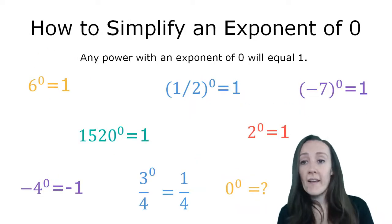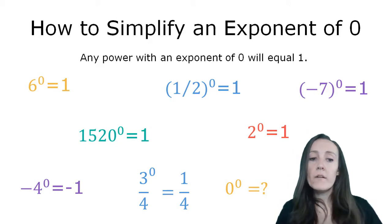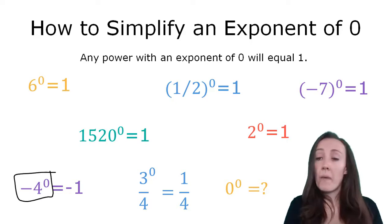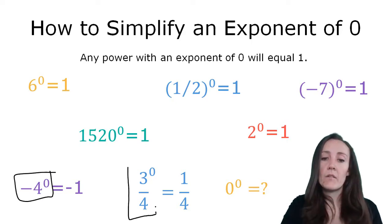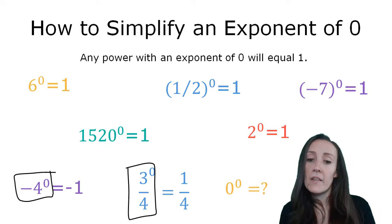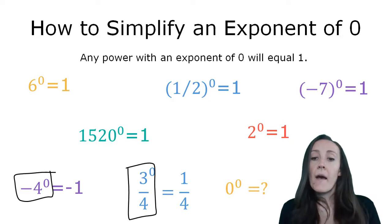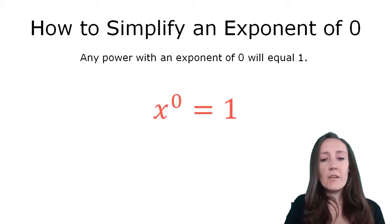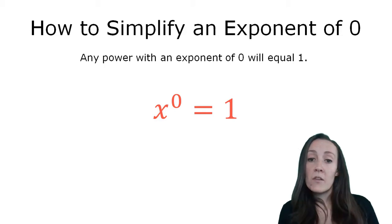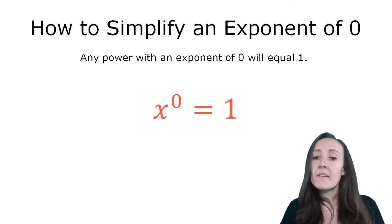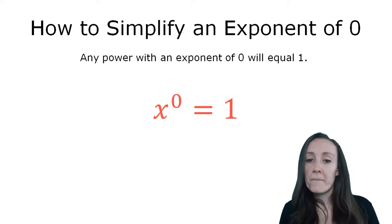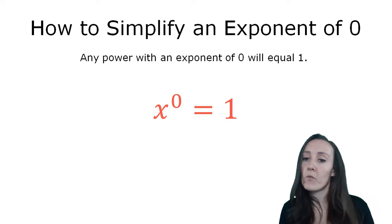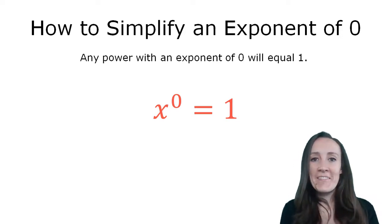So to summarize: to simplify an exponent of zero, basically any number raised to a zero power will equal one. You just have to pay attention to what the zero power is applying to, like we looked at in the negative number examples and the fraction examples. And zero to the zero power — we don't really know what it equals. If you want to write a formula down in your notes, a good formula for the exponent of zero would be: x to the zero power equals one. And that's how you simplify an exponent of zero.